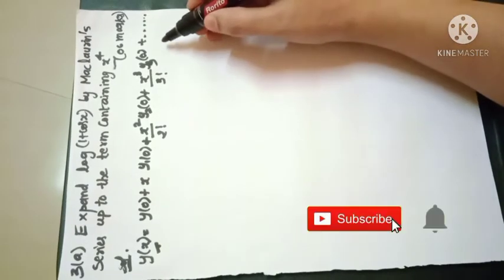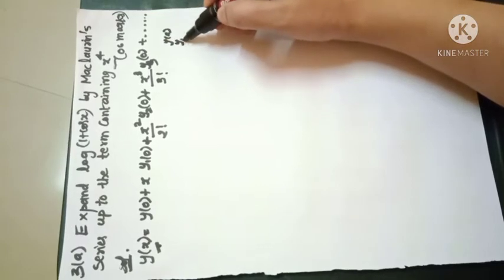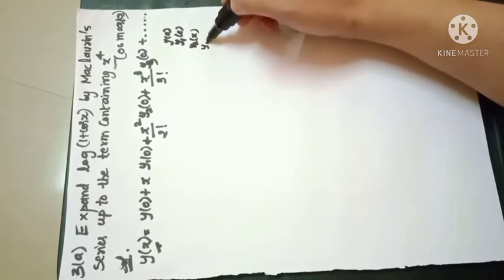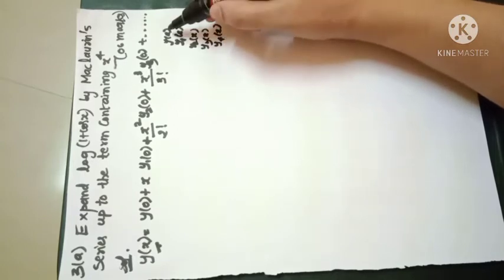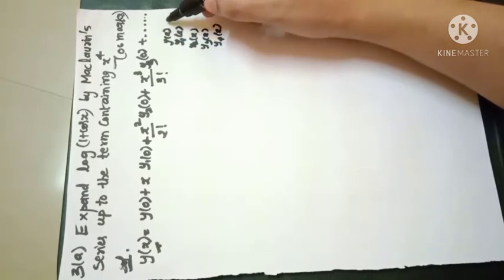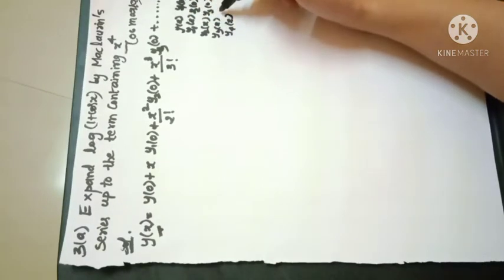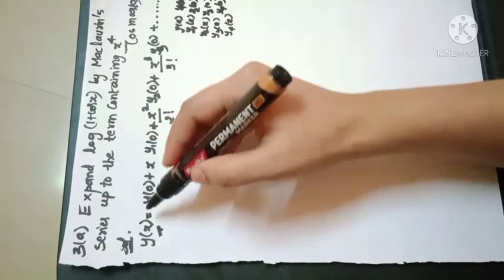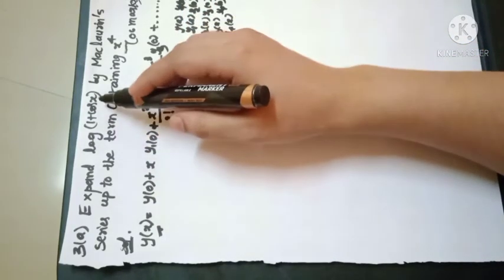What we need to find is y(x), y1(x), y2(x), y3(x), and y4(x) — that is, up to the 4th differentiation — and then put x = 0 to get y1(0), y2(0), y3(0), y4(0). We substitute all these values into the expanded series to get the expansion of log(1 + cos x).